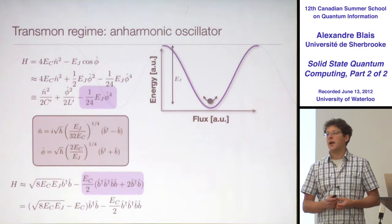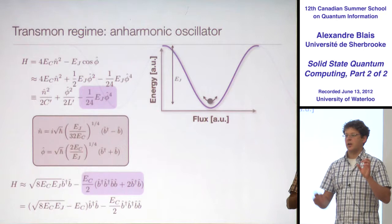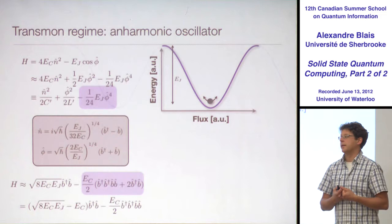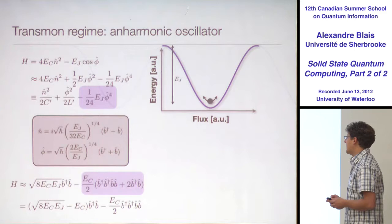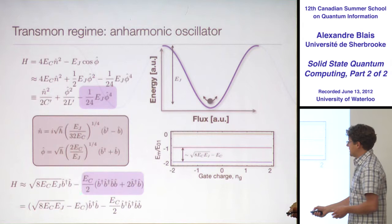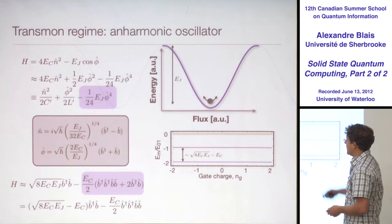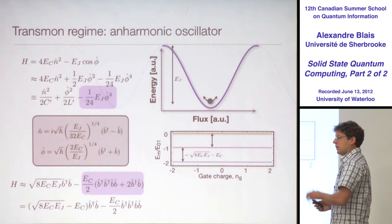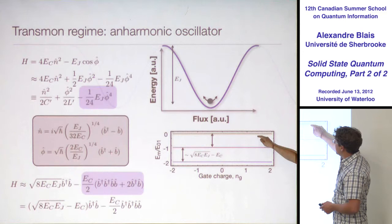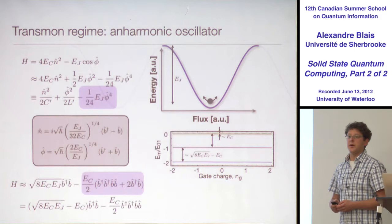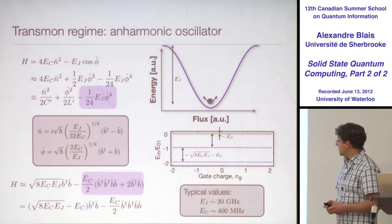This term is the required non-linearity. You can rewrite this if you want as B-dagger B squared — it's kind of a photon-photon interaction. That's the non-linearity that we wanted. So EC is the anharmonicity of this qubit. The energy separation is the plasma frequency minus EC, and the next level is a little bit below by EC.